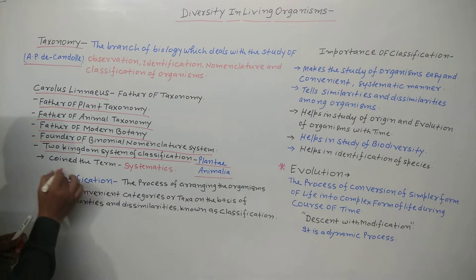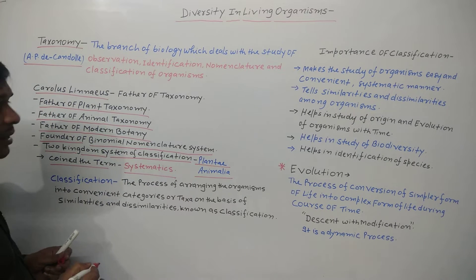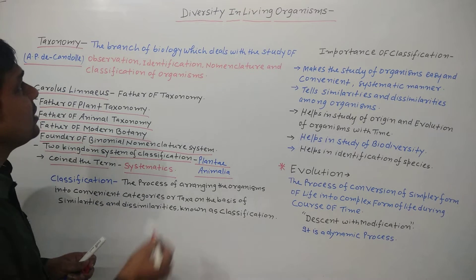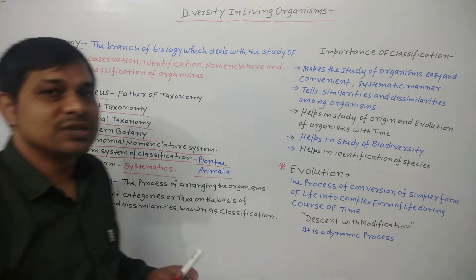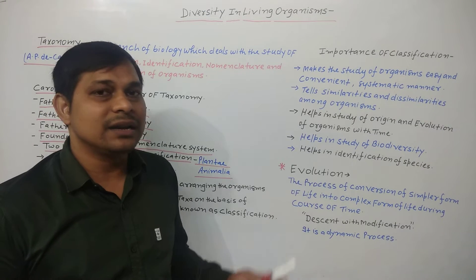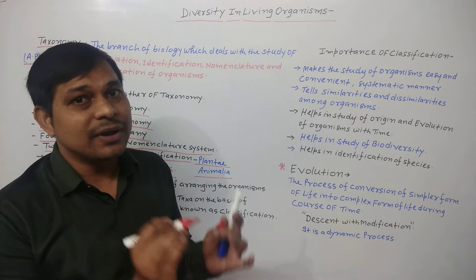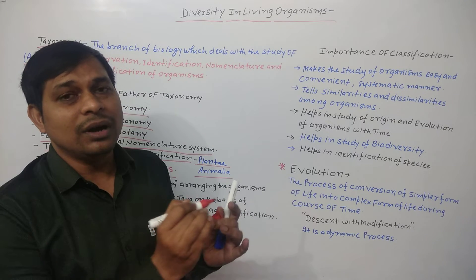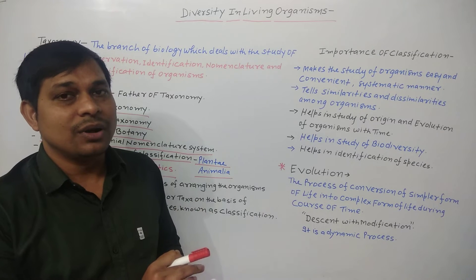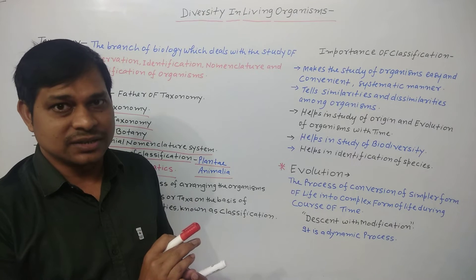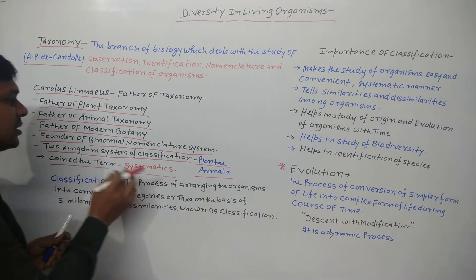The term 'Systematic' was also coined by Carolus Linnaeus. Systematic is similar to Taxonomy — in Systematic, we also study observation, identification, nomenclature, classification, and the affinities among organisms. Affinities means what is the relationship among organisms: the evolutionary relationship and the phylogeny. That comes under Systematic.